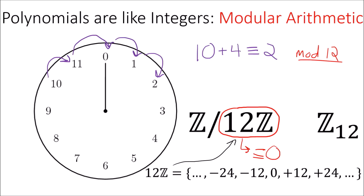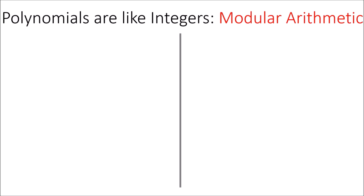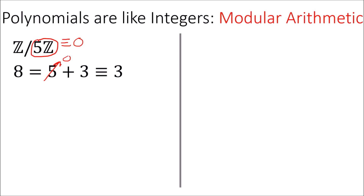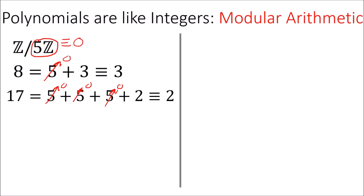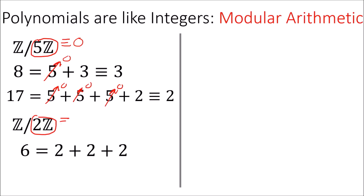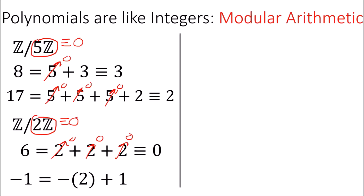So if we're dealing with the integers mod 5, since 8 equals 5 plus 3, recall that whatever is behind the slash is equivalent to 0, so we can set this 5 to 0. This means that 8 is equivalent to 3 in the integers mod 5. Similarly, since 17 equals 5 plus 5 plus 5 plus 2, we set all the 5s to 0 and see that 17 is equivalent to 2 mod 5. In the integers mod 2, since 6 is 2 plus 2 plus 2, 6 is equivalent to 0 mod 2. And in the case of negative 1, since negative 1 equals negative 2 plus 1, we set the 2 to 0 and find that negative 1 is equivalent to positive 1 mod 2.